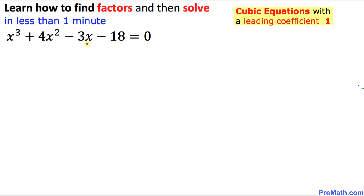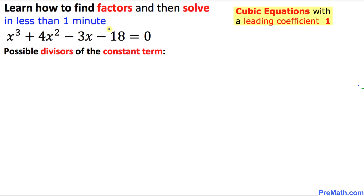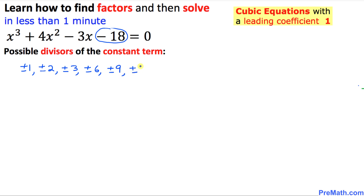Here is our second example. We want to find the factors of this given cubic equation whose leading coefficient is 1, also in descending order. The first step is to find the possible divisors of the constant term. The possible integer divisors are positive or negative 1, positive or negative 2, positive or negative 3, positive or negative 6, positive or negative 9, and positive or negative 18.